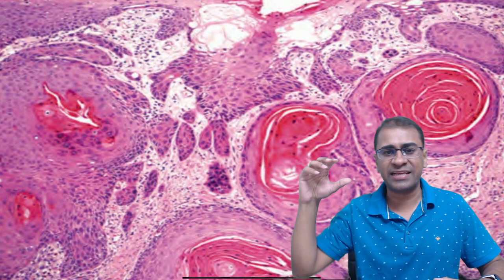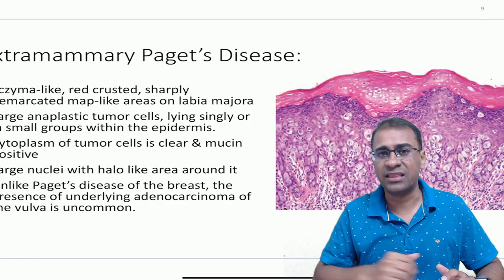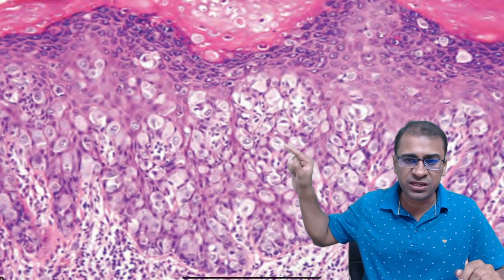You all might have seen squamous cell cancer — it can involve the vagina and the vulva, which will include keratin pearls and the malignant squamous cells as you see here. Remember, this is often due to the human papillomavirus, specifically types 16 and 18, which are the most aggressive variety.